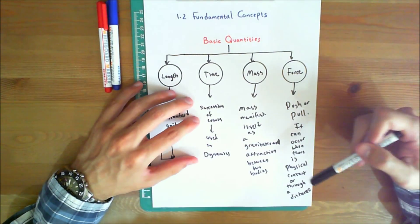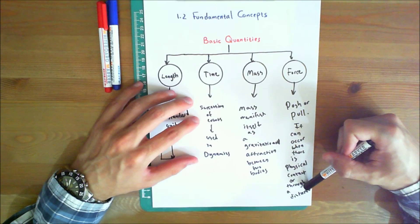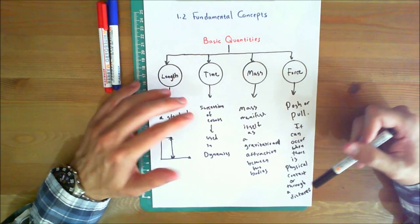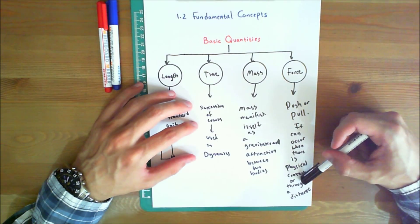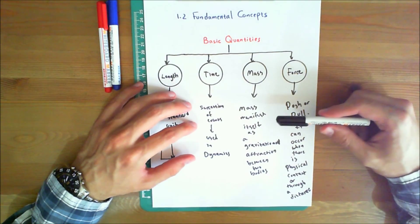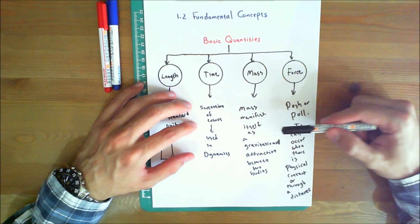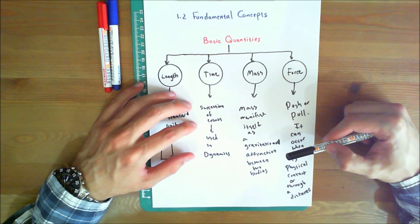Now, what I mean by through a distance, examples of this type of force include gravitational, electrical, magnetic forces. In any case, a force is completely characterized by its magnitude, direction, and point of application.